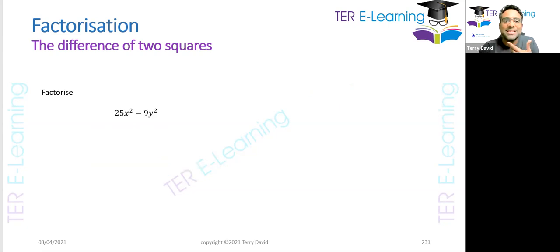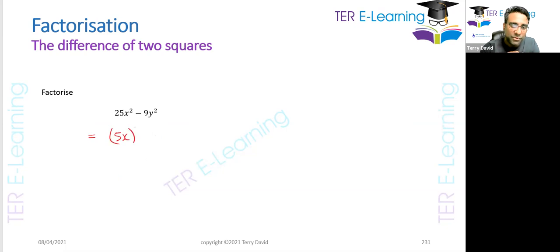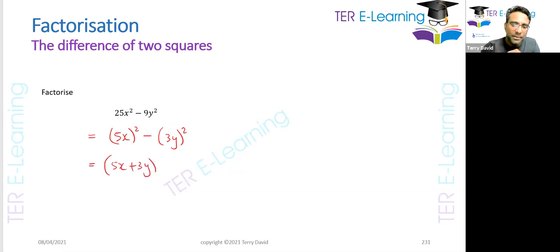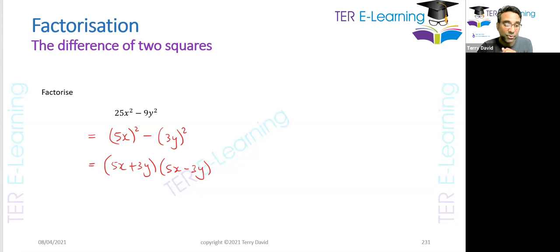Let's look at another one: 25x squared minus 9y squared. We have two terms separated by a minus sign, and each of those two terms are square variables. So 25x squared can be written as (5x) squared, and 9y squared can be written as (3y) squared. Therefore I can write this as (5x plus 3y)(5x minus 3y). The two brackets are identical except for the sign between the terms.